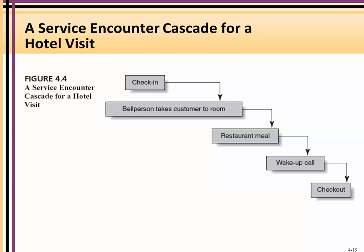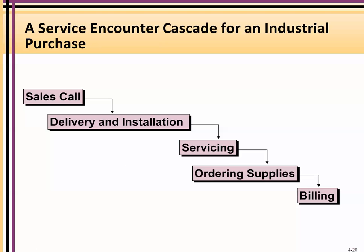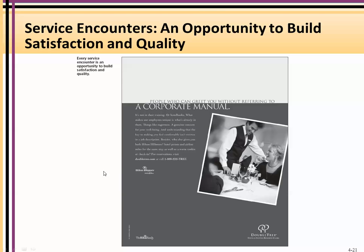Here's an example of a service encounter cascade — a special form of flowchart that shows a sequence of events without decision points. For a hotel: you check in, a bell person takes the customer to the room, there's a restaurant meal, a wake-up call, a checkout. For an industrial purchase: a sales call, delivery, servicing, ordering supplies, billing. Each one of those is a touch point with the customer and an opportunity to make a difference — to build loyalty and have a repeat customer.